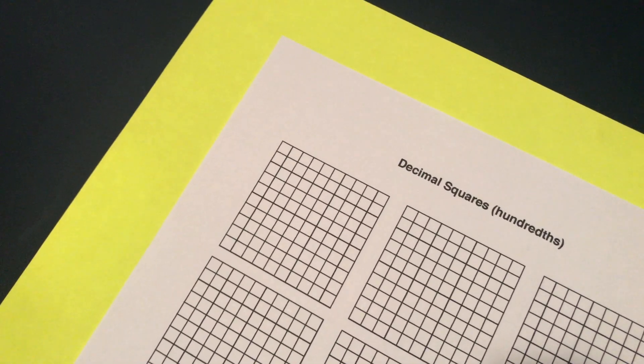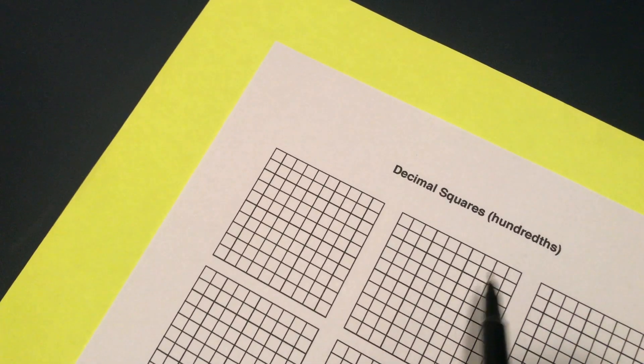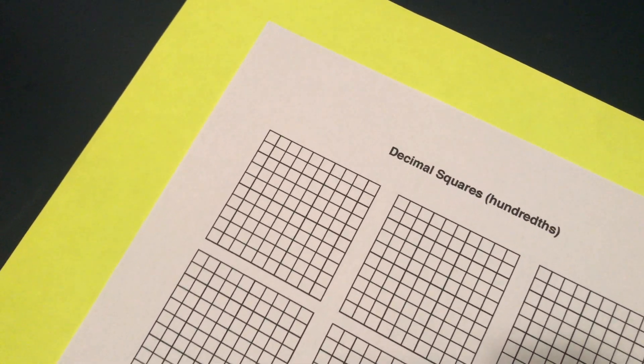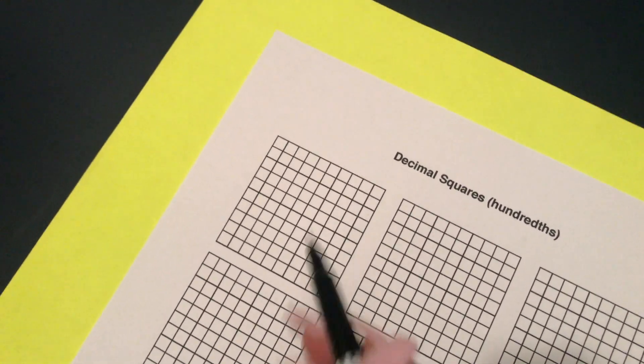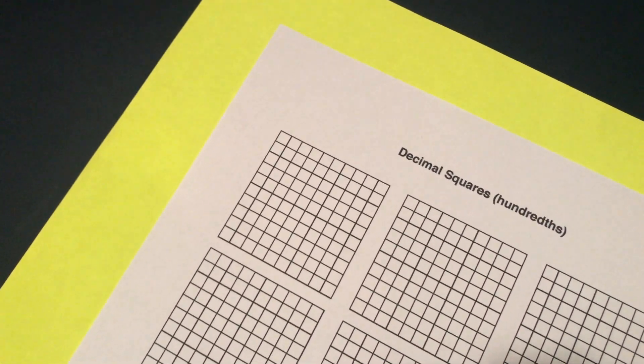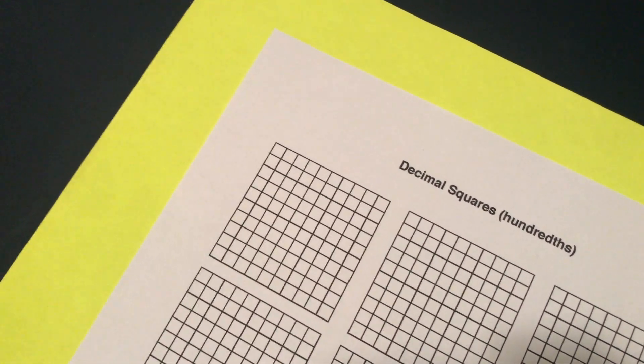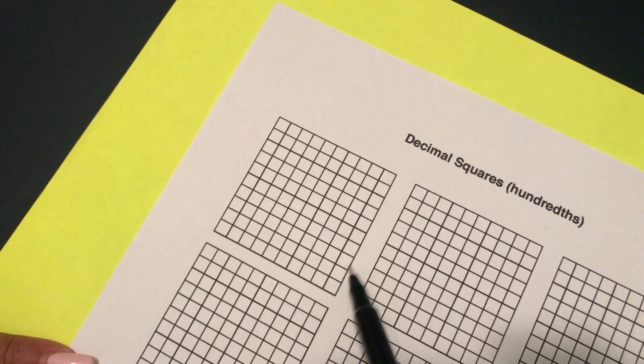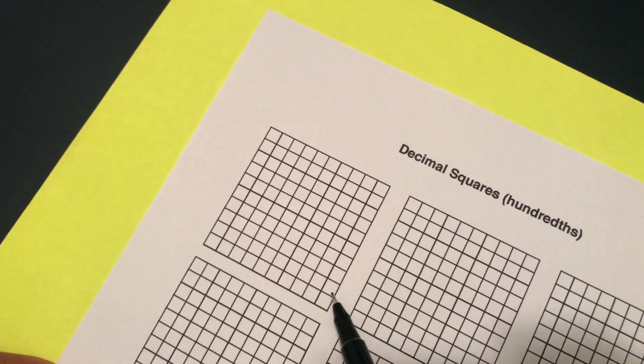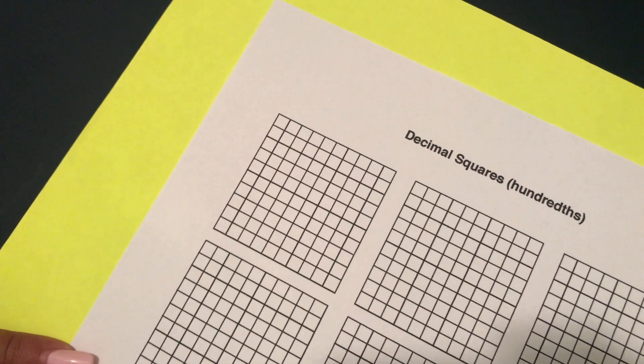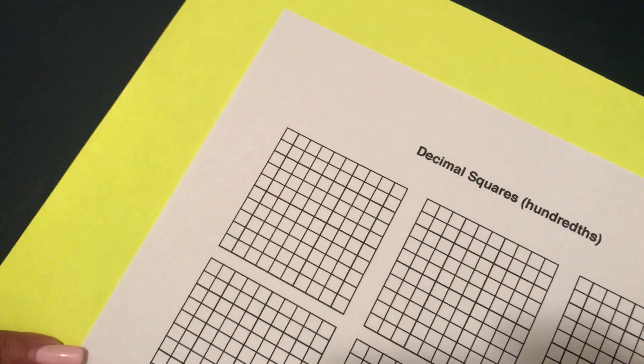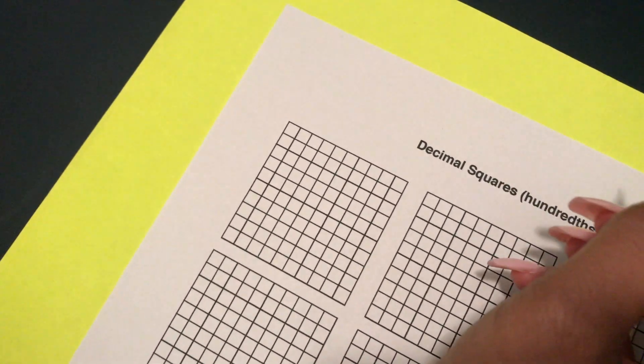I'm now going to show you how to multiply decimals using base 10 models. So for the fifth grade standard they really want you to be able to do it with models instead of the traditional algorithm although I'm going to show you both. So this represents hundredths because there's 100 of these and 100 would make up a whole. So if this whole thing was shaded it would be one whole.